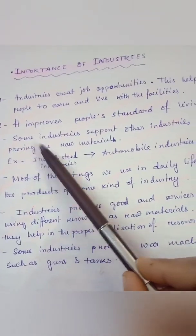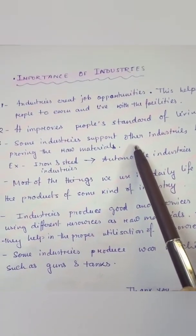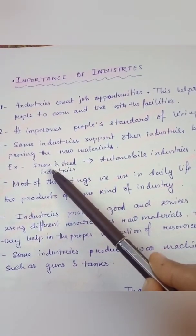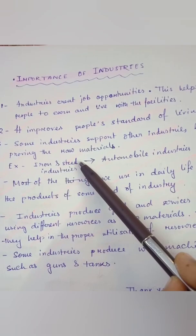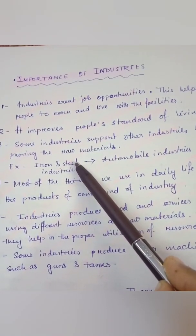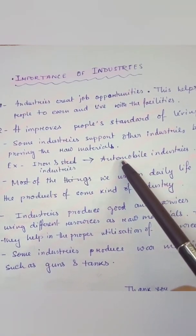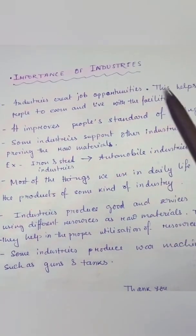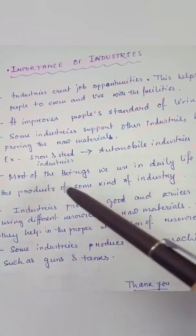Third, some industries support other industries by providing raw materials. For example, in the iron and steel industry, after processing iron ore from mines, we get iron and steel as finished products. This iron and steel is then used as a raw material in other industries like the automobile industry, locomotive industry, and shipbuilding industry, which use iron and steel for their manufacturing purposes.